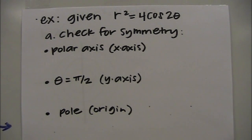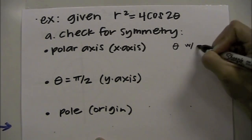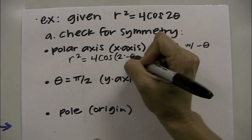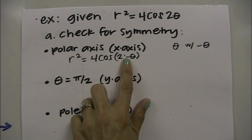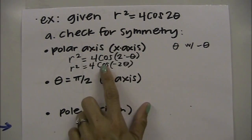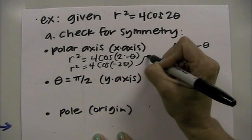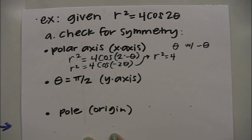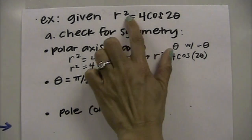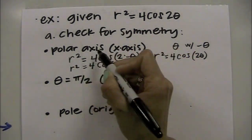Let's look at r² equals 4 cosine of 2θ. Part a: check for symmetry. First, check polar axis symmetry by replacing θ with negative θ. You get cosine of negative 2θ. Since cosine is an even function, cosine of negative 2θ equals cosine of 2θ. The resulting equation is the same as the original, so it does have x-axis or polar axis symmetry.